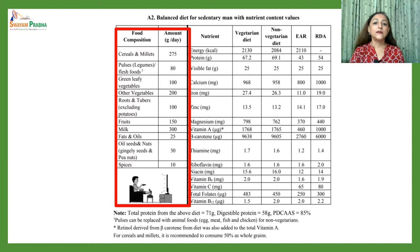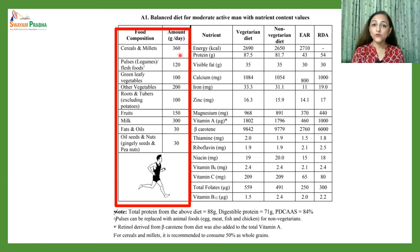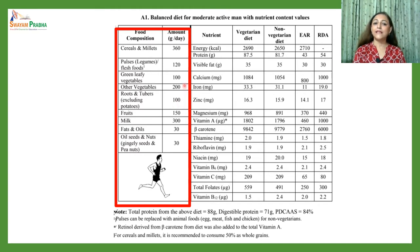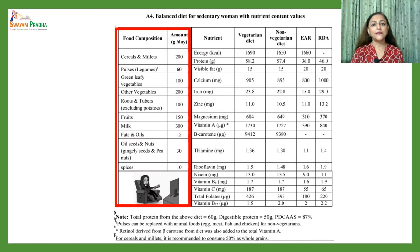Balanced diet guidelines are also given for other categories. For a moderate or physically active worker, cereals and millets increase from 275 to 360 grams and pulses and legumes increase from 80 to 120 grams. However, green leafy vegetables remain at 100 grams, other vegetables at 200 grams, roots and tubers at 100 grams, and fruits and milk remain unchanged. Fats and oils increase by 5 grams.